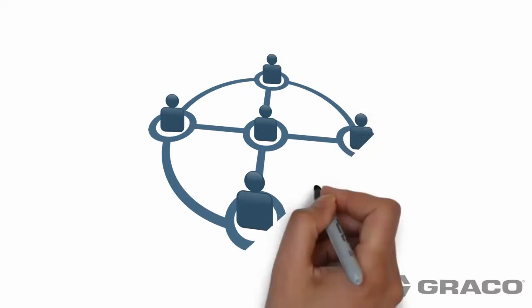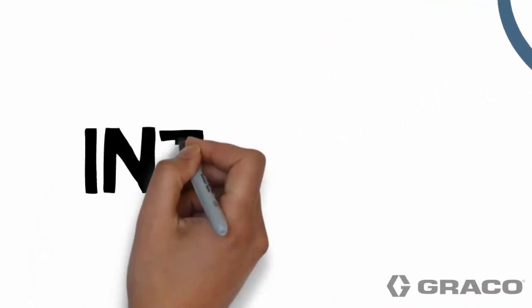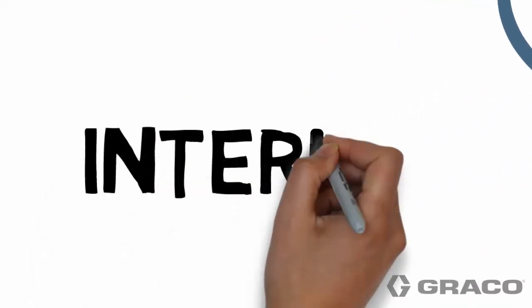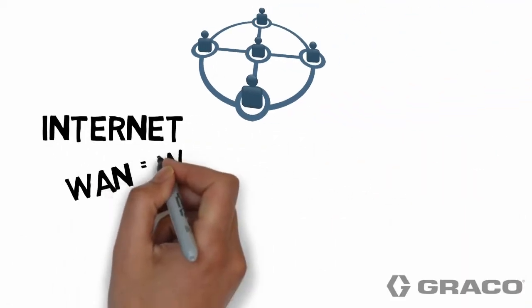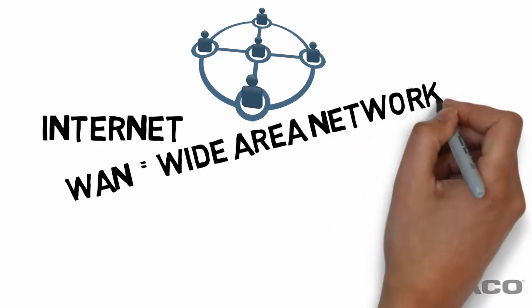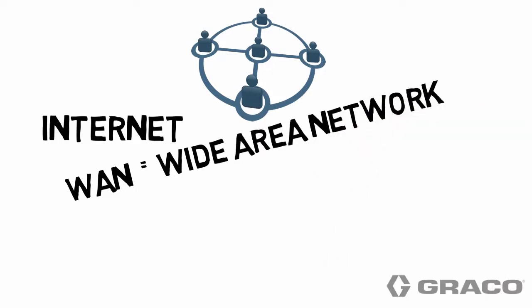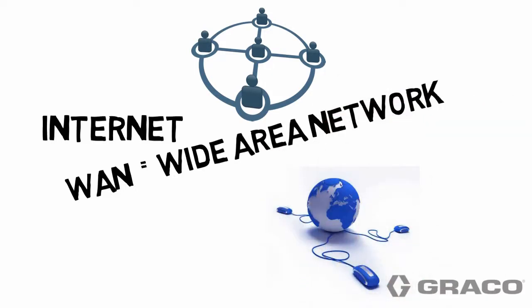A network is defined as a group or system of interconnected people or things. For example, the Internet, in the land of acronyms, is what's called a WAN, or Wide Area Network. Wide, because it covers a large area, like, say, the world. Think WWW, World Wide Web.